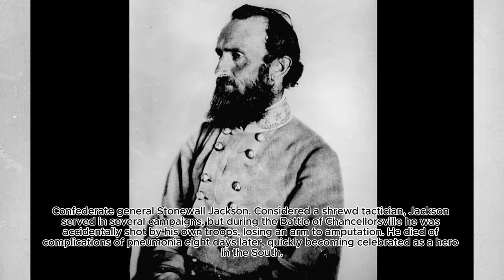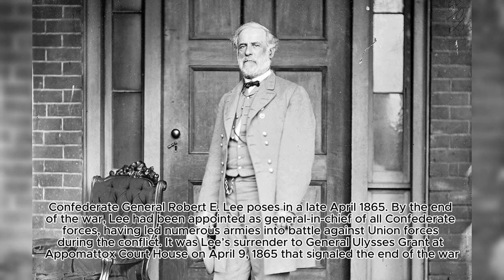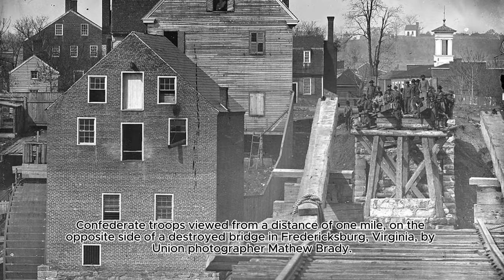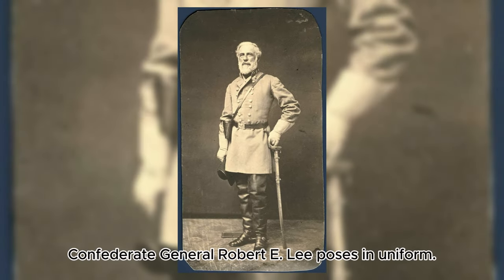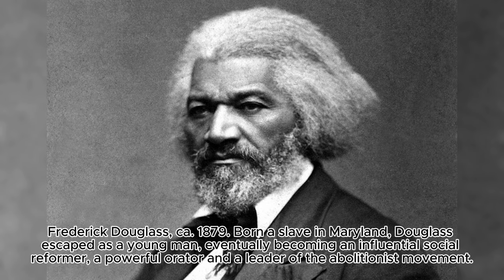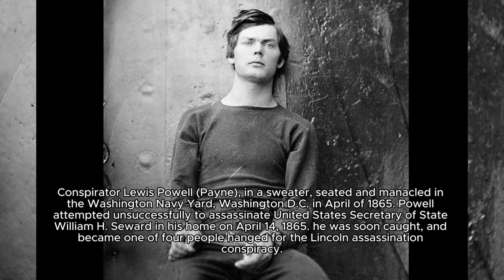General Robert E. Lee, a distinguished military leader, commanded the Confederate Army of Northern Virginia. Despite personal opposition to secession, Lee's loyalty to his home state of Virginia led him to fight for the Confederacy. His tactical brilliance, though ultimately not enough for a Confederate victory, earned him a revered place in American military history. General Ulysses S. Grant rose from obscurity to become the leading Union general by the war's end. His relentless and strategic approach helped turn the tide of the war, culminating in the surrender of Lee at Appomattox Courthouse. Grant's leadership would later guide him to the presidency, where he continued efforts to unify and repair the nation.